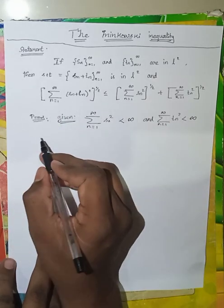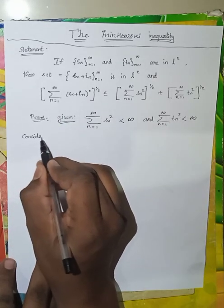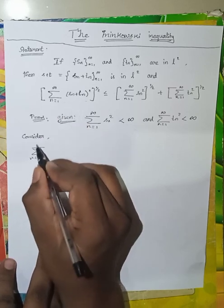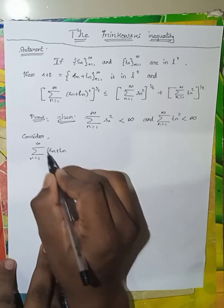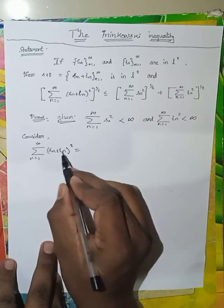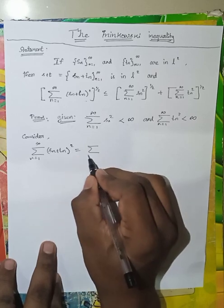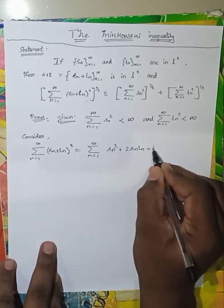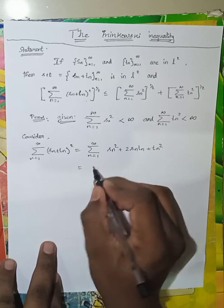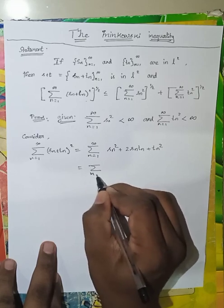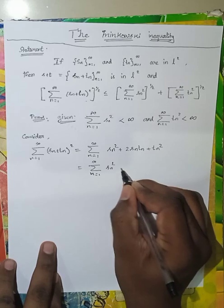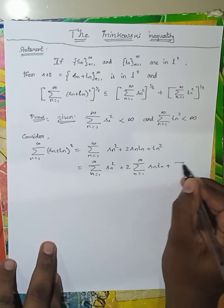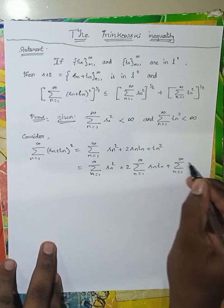If we prove this inequality, let's consider summation from n=1 to infinity of (Sn + Tn)². Applying the (a+b)² expansion, this equals summation from n=1 to infinity of (Sn² + 2·Sn·Tn + Tn²), which equals summation n=1 to infinity of Sn², plus 2 times summation n=1 to infinity of Sn·Tn, plus summation n=1 to infinity of Tn².